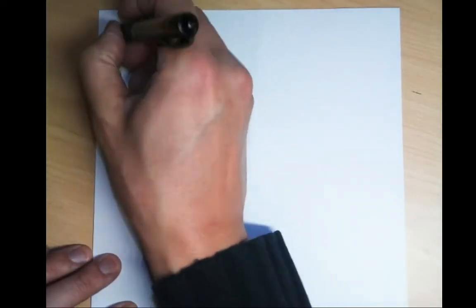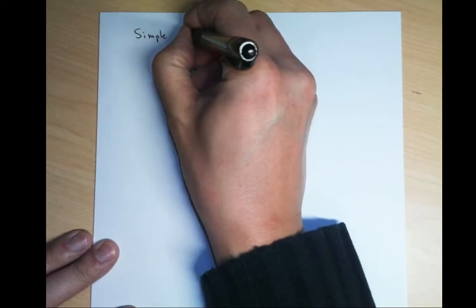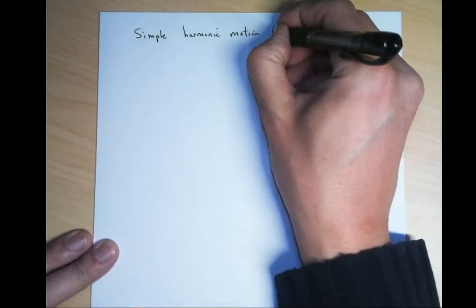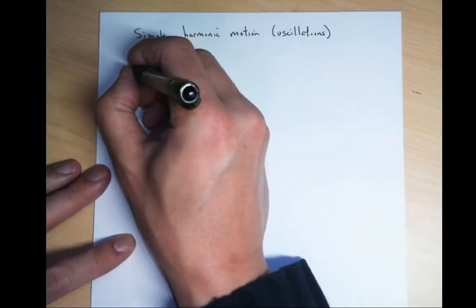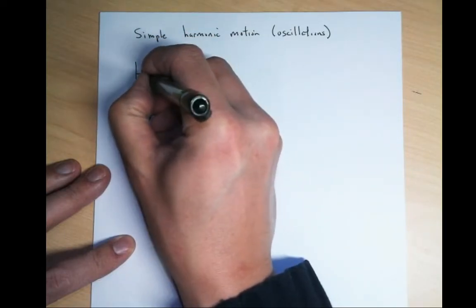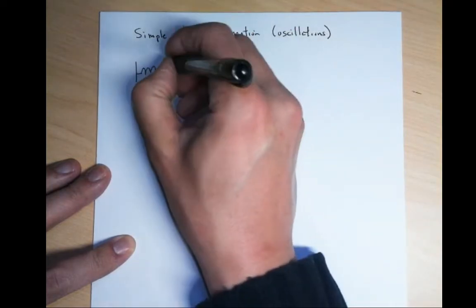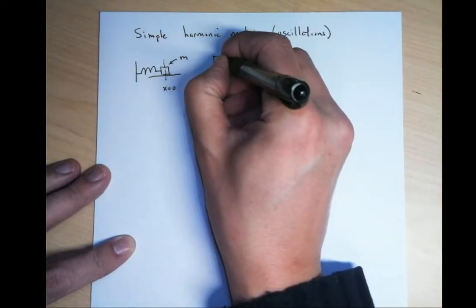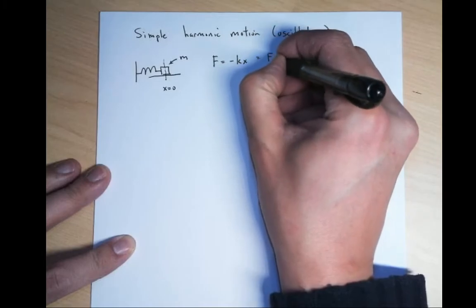In this section, we will start discussing simple harmonic motion or oscillation. Let's imagine a spring system sitting on some frictionless surface. At equilibrium, x is equal to zero, and this gives us a mass. The Hooke's law of spring, if you recall, is minus kx, and if this is equal to the net force, that's also equal to ma.